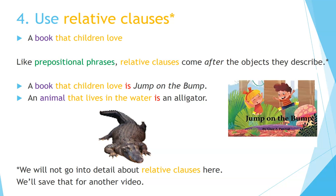Four: use relative clauses. A book that children love. Like prepositional phrases, relative clauses come after the objects they describe. For example, a book that children love is 'Jump on the Bump.' An animal that lives in the water is an alligator. We will not go into detail about relative clauses here — we'll save that for another video.